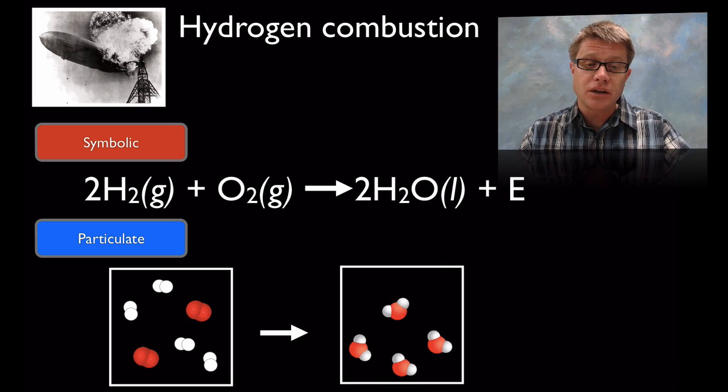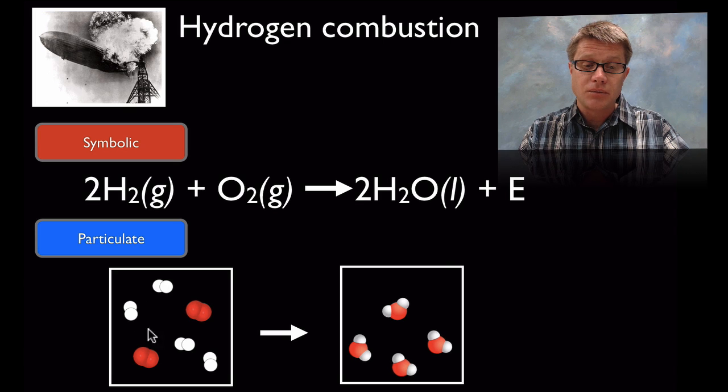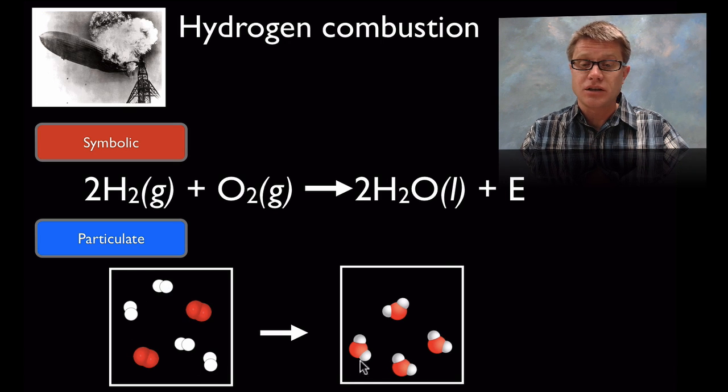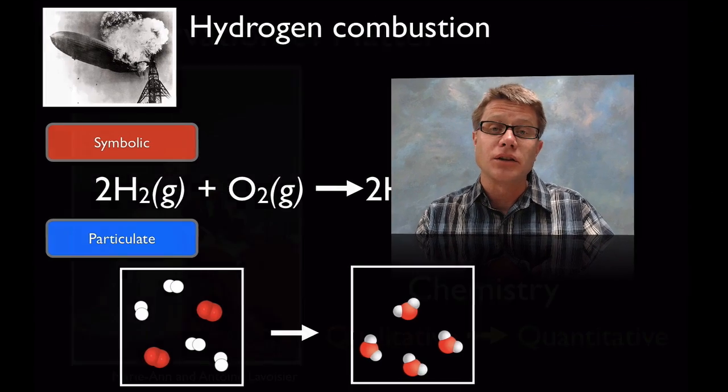If we had a particulate drawing, here would be our hydrogen—we have 1, 2. In this drawing we have 4 hydrogen molecules. So the H2 means we have 2 of the hydrogen, and then we'd have 4 of these molecules combining with 2 molecules of oxygen. In this case we'd have 4 molecules of water.